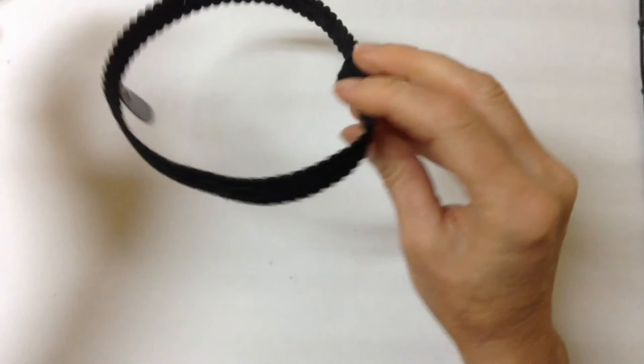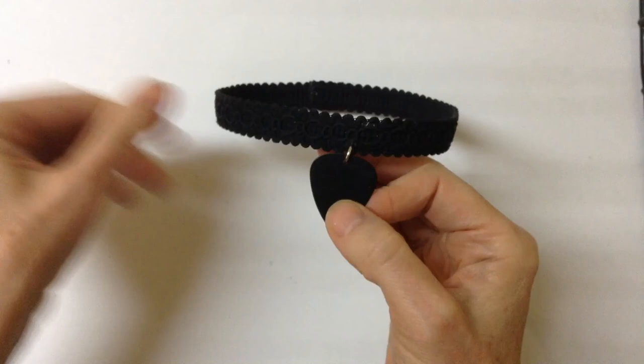So there you have your quick and easy clasp. You just close it up and there you have your choker with a guitar pick.